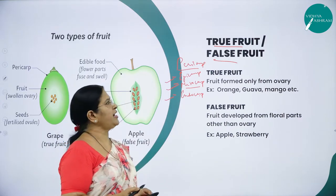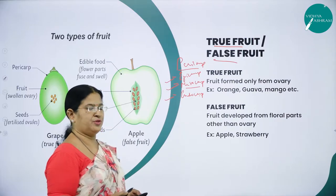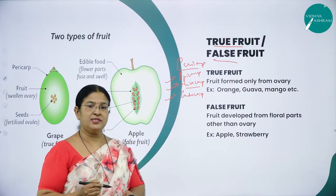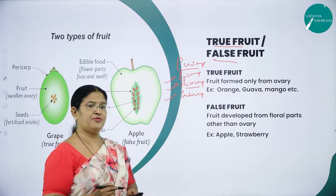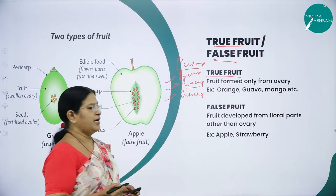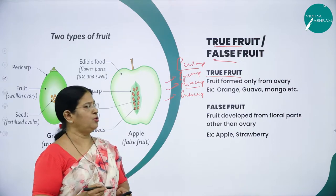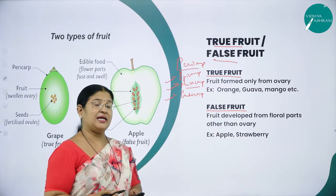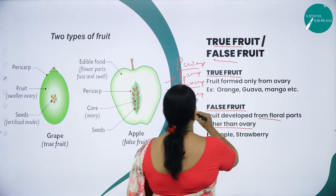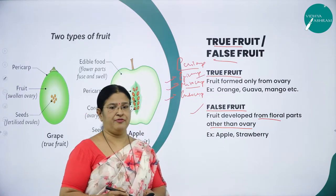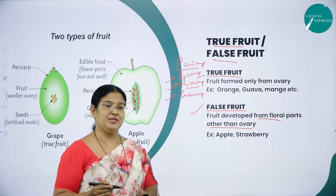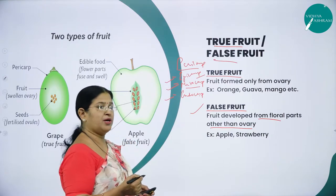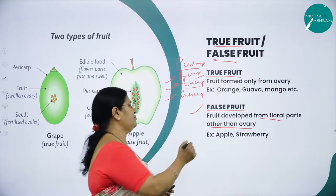There are two types of fruit: true fruit and false fruit. True fruits are fruits which develop only from the ovary. False fruits do not develop from the ovary; they develop from the thalamus — the receptacle or torus which holds all the other floral parts. If the fruit develops from other floral parts or accessory parts like the thalamus, we call such a fruit a false fruit.